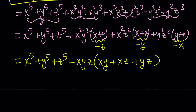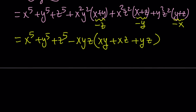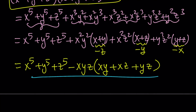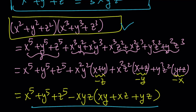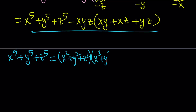So we have a product relationship. We're going to isolate x to the fifth plus y to the fifth plus z to the fifth. Moving terms to the other side gives us: x to the fifth plus y to the fifth plus z to the fifth equals (x squared plus y squared plus z squared) times (x cubed plus y cubed plus z cubed), plus xyz times (xy plus xz plus yz). Now let's substitute the expressions we found for the sum of squares and the sum of cubes.